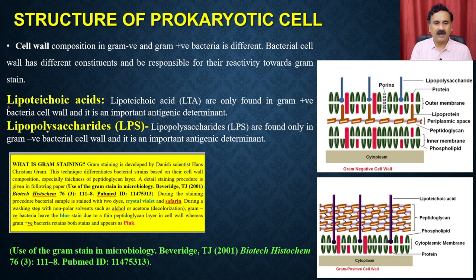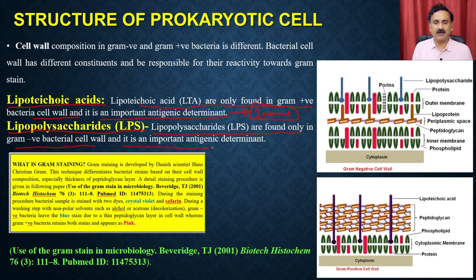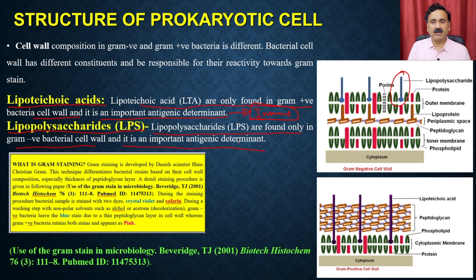Apart from peptidoglycan, the cell wall also has lipoteichoic acid. Lipoteichoic acids are only present in gram-positive bacterial cell walls and are important antigenic determinants — the immune system actually works against lipoteichoic acid and produces a response. Then we have lipopolysaccharides (LPS), which are only present in gram-negative cell walls. LPS is a very important antigenic determinant because it induces an immune response in humans.